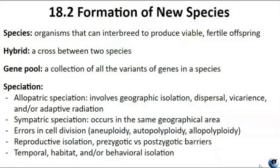Although all life on Earth shares genetic similarities, only certain organisms engage in sexual reproduction and produce offspring capable of successful reproduction, and these organisms are referred to as members of the same biological species. The species is defined as a group of individual organisms that can interbreed and produce fertile, viable offspring. In nature, when individuals from different species cannot produce fertile offspring through mating, they are considered different species. Members of the same species share both external and internal characteristics that develop from their DNA. The more closely related two organisms are, the more DNA they have in common.